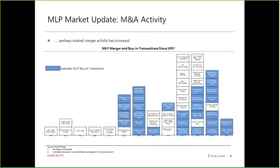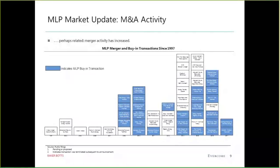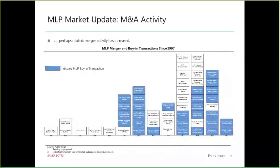All of this combined has perhaps increased merger activity. The M&A market for MLPs was always difficult in the early 2000s. You really have four transaction parties: the LP on one side, the LP on the other side, the GP on one side, and the GP on the other side. That's why we really didn't see much M&A activity at all in the 2000s.